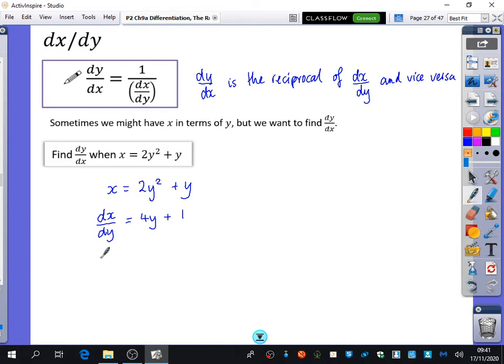And then I want to find out what dy/dx is. So to go from this stage to this stage, I'm just going to take the reciprocal, and I get that dy/dx is equal to 1 over 4y plus 1.